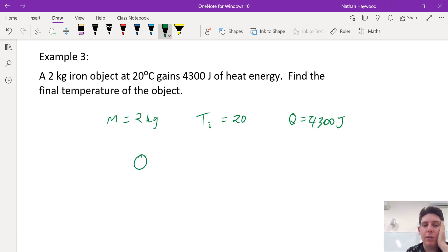It wants us to find the final temperature. So hopefully you remember the formula. So change in temperature is equal to the final temperature minus the initial temperature. So we don't know what that is, and that's what we're trying to find.